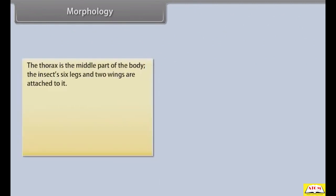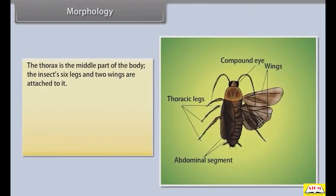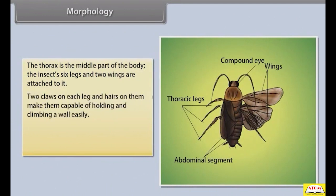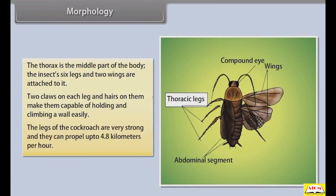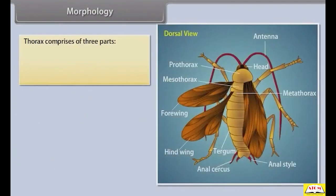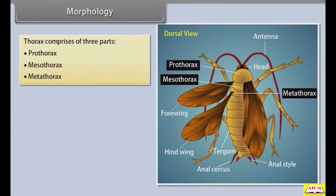The thorax is the middle part of the body. The insect's six legs and two wings are attached to it. Two claws on each leg and hairs on them make cockroaches capable of holding and climbing a wall easily. The legs are very strong and can propel the cockroach up to 4.8 kilometres per hour. The thorax comprises three parts: prothorax, mesothorax, and metathorax.